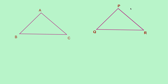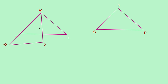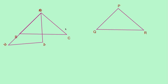Now, if I place vertex Q on A, will it become congruent? Let us check. If A corresponds to Q, then B corresponds to R and C corresponds to P. Is it covered exactly? No. So in this correspondence, the triangles are not congruent. In this correspondence, the matching is A to Q, B to R, and C to P, but this matching is not congruent.